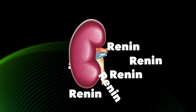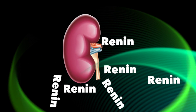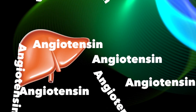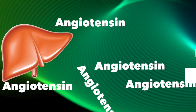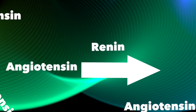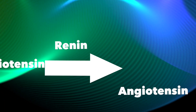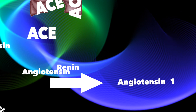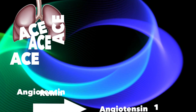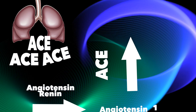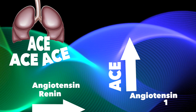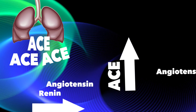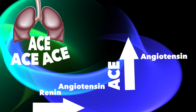When it comes to biochemistry, the kidney secretes renin and the liver secretes angiotensinogen. Renin converts angiotensinogen into angiotensin 1. The lungs secrete angiotensin converting enzyme (ACE), which converts angiotensin 1 to angiotensin 2.